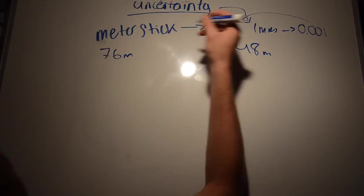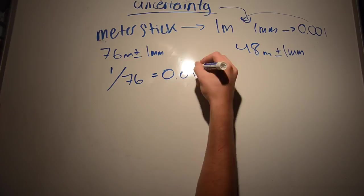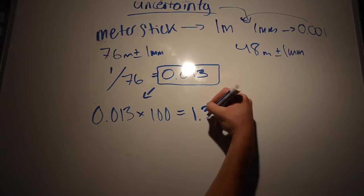So take 76 meters. It's still going to be plus or minus 1 millimeter for either 76 or 48. So first divide 1 by 76, you get 0.013. Multiply that by 100, and you get 1.3% uncertainty.